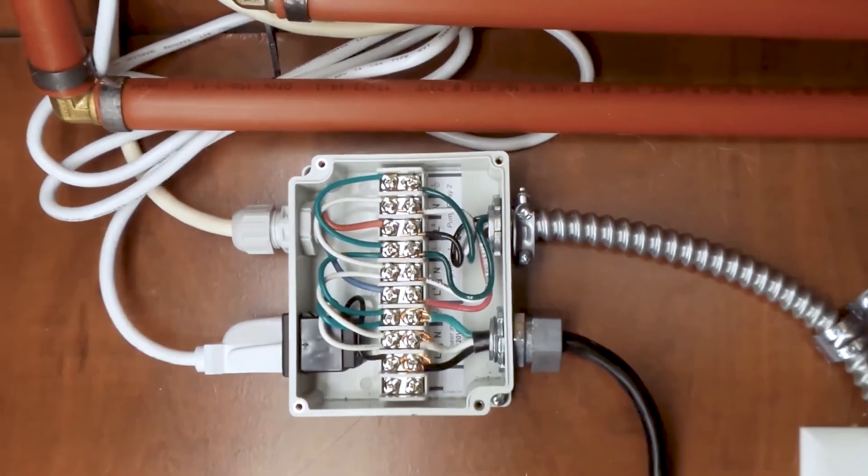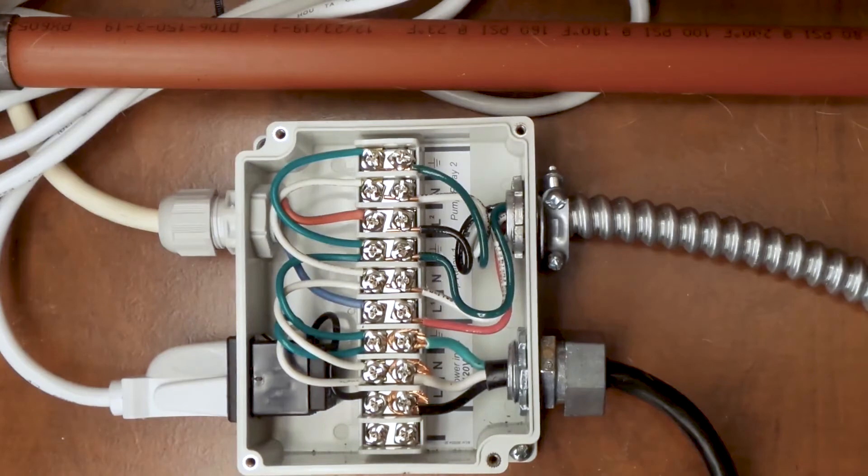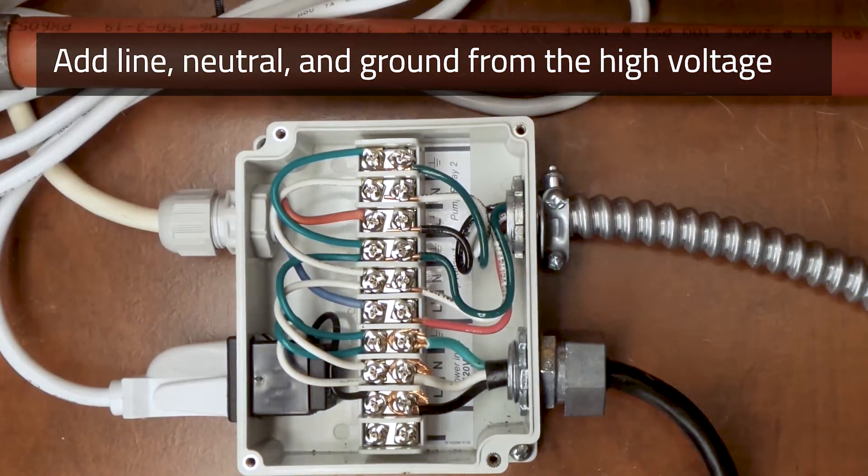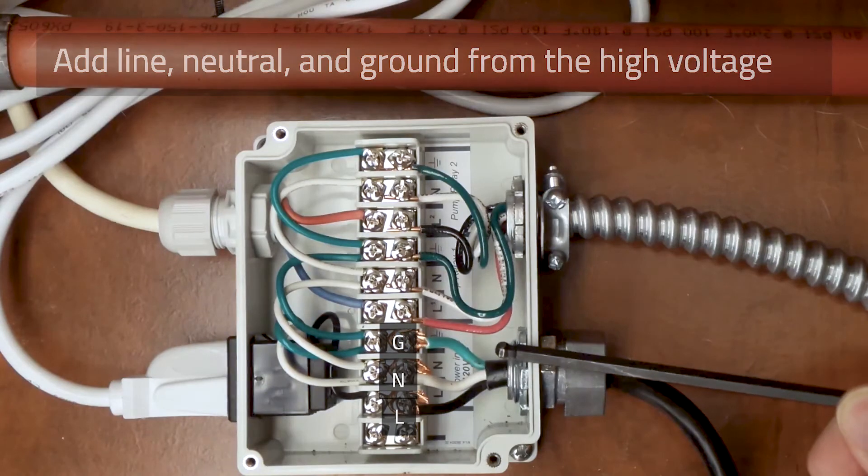This block is already pre-wired from the factory, so in the field, all one has to do is add the line, neutral, and ground from the high voltage. Line, neutral, ground.